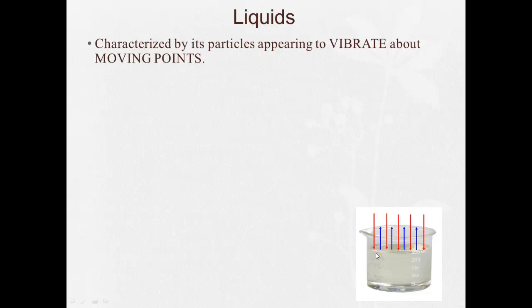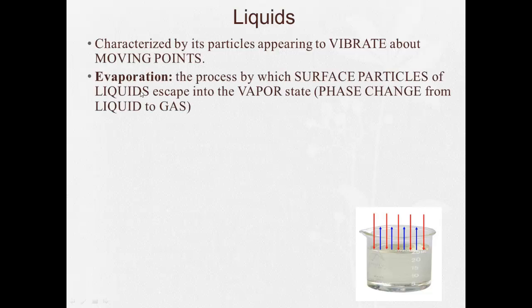If we look at this picture down here, these blue arrows are representing evaporation, which is the process by which surface particles of liquids escape into the vapor state. They're undergoing a phase change from liquid to gas, but it's a very specific kind. Please don't confuse evaporation with vaporization or boiling because they are different. Evaporation only takes place at the surface.